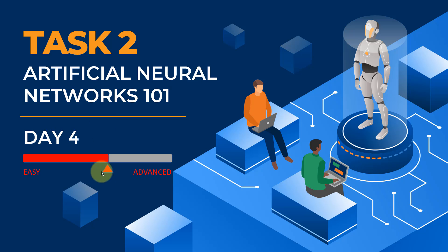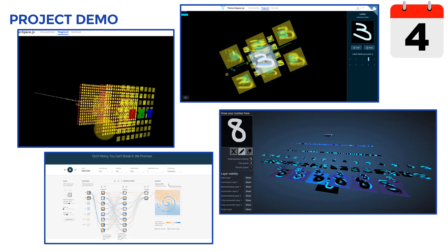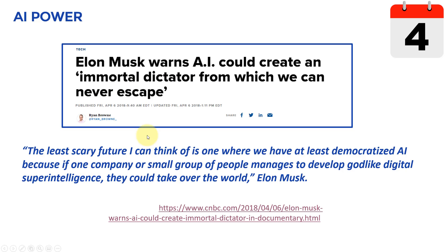Today's lecture is at an intermediate level because we're going to cover some math and some advanced topics as well. If you remember, in the previous task we covered the project card and demo. We learned about deep neural networks and how to visualize various layers and architectures, and we went through demos showing TensorSpace.js, the TensorFlow Playground, and the Ryerson 3D visualization.